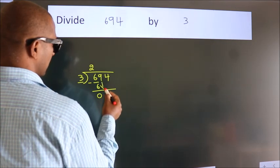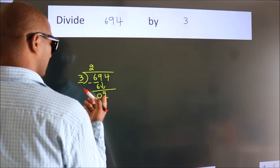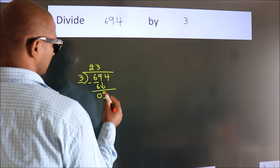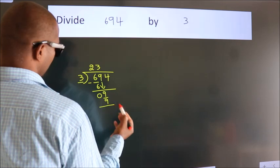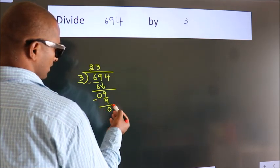bring down the beside number. So 9 down, so 9. When do we get 9? In 3 table, 3 3s, 9. Now we subtract, we get 0. After this,